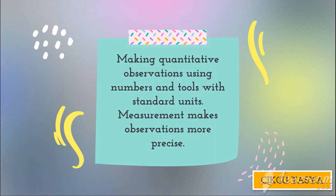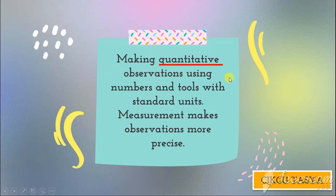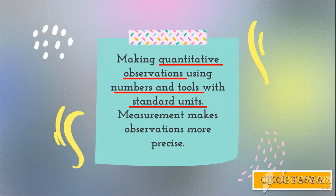The definition of measure and use numbers is making quantitative observations using numbers and tools with standard units. This measurement makes observation more precise. Remember, quantitative means it has to use numbers — it is a quantitative observation using numbers and tools with standard units, which makes the measurement more precise.